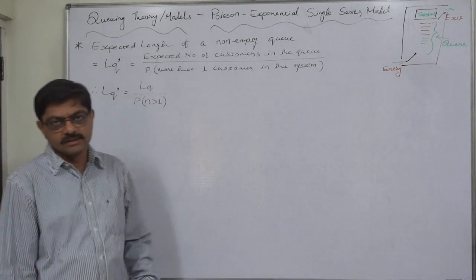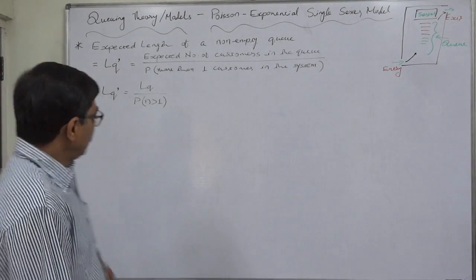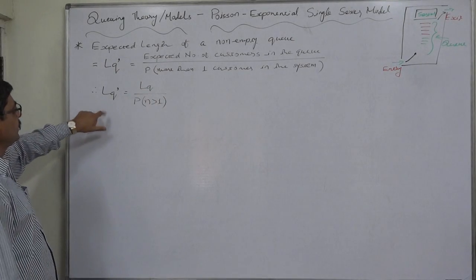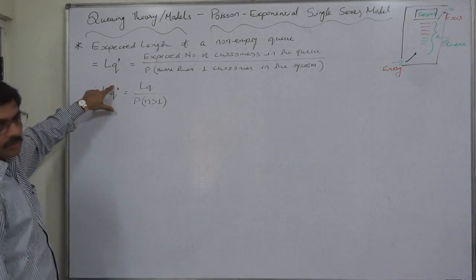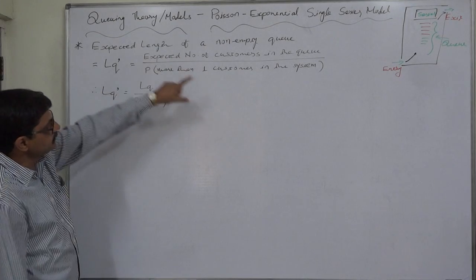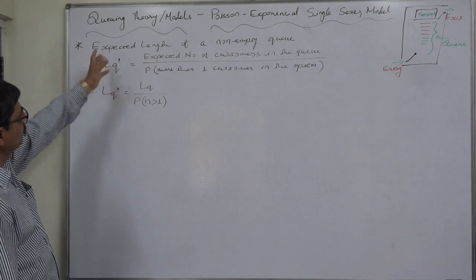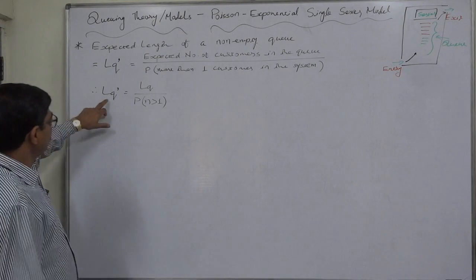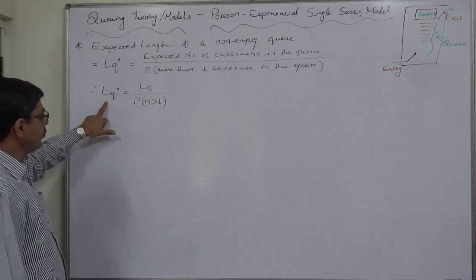The sign we are going to use for expected length of a non-empty queue is lq dash, the apostrophe, because lq is expected number of customers in the queue. So a similar kind of sign we are going to use.